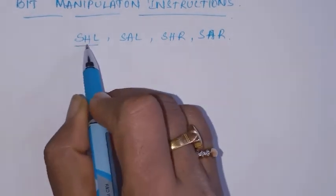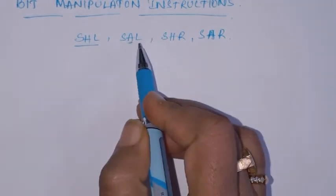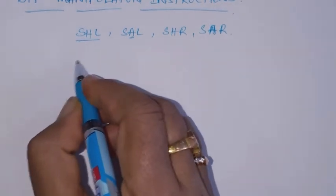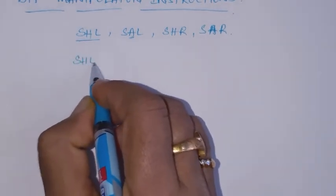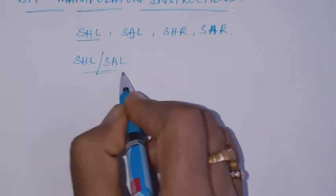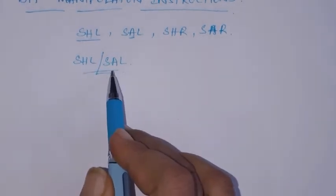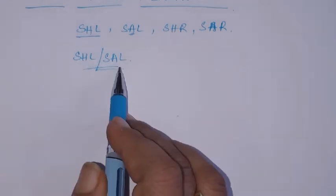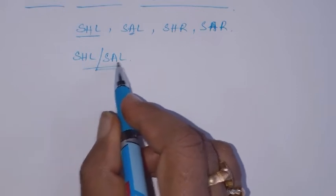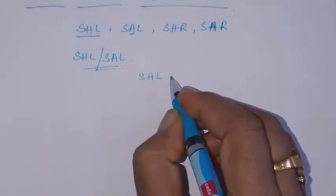SHL is a logical shift, while A indicates arithmetic shift. In the case of left shift, SHL and SAL are the same — two mnemonics for the same instruction. The result will be the same with SHL or SAL; any instruction you can use. The format for this is SHL destination, count.